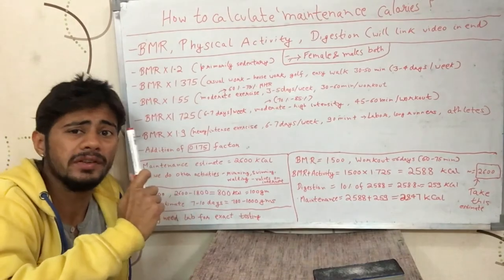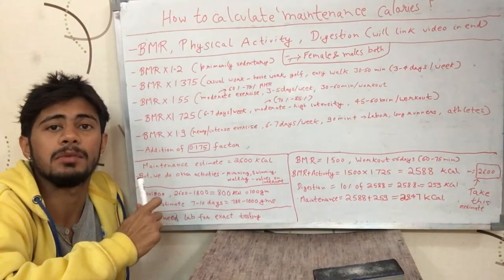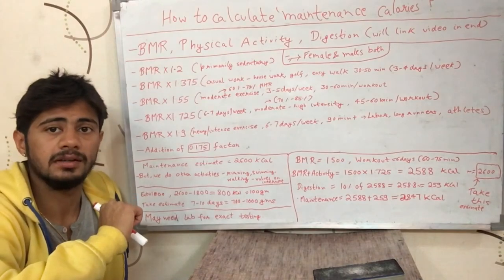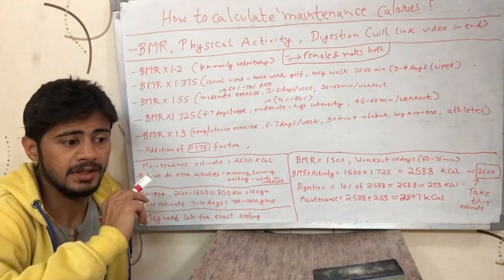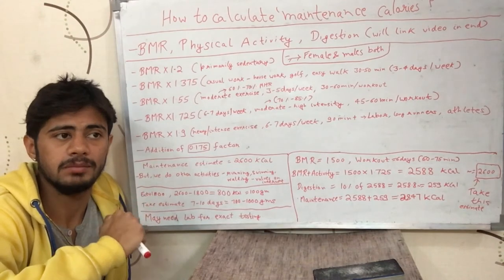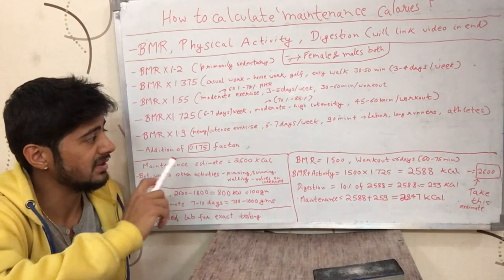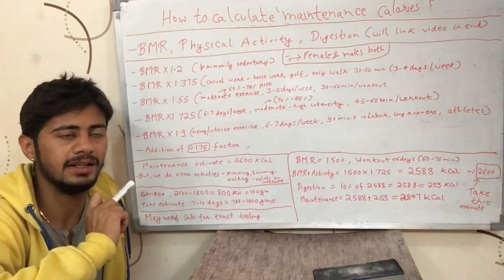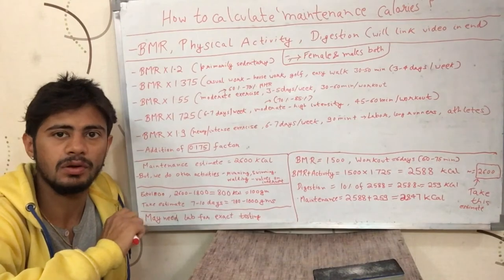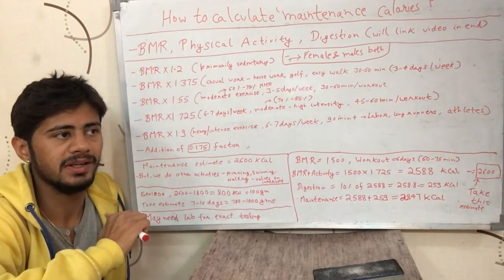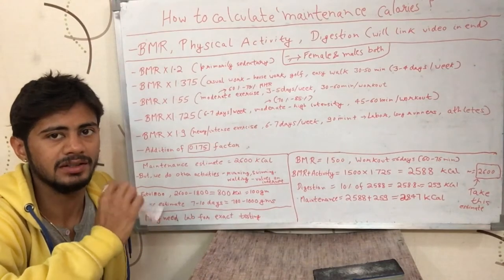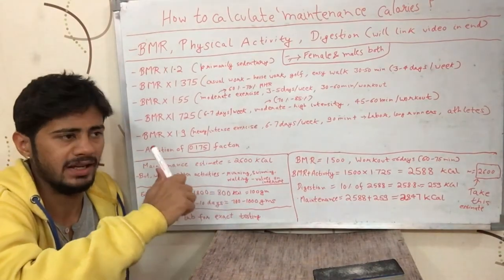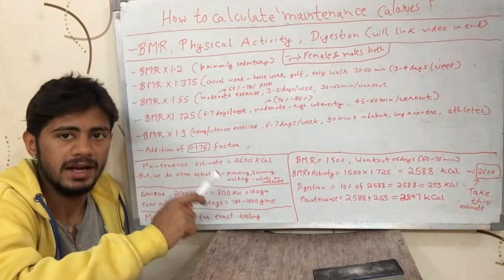All of this gives you an estimate — it is not going to give you the exact number of calories your body burns. It is very hard to know the exact number, and even if there is a laboratory test for it, it is not feasible for a common person. Almost everyone works on this estimate, and it works fine — even when training clients, we use estimates.